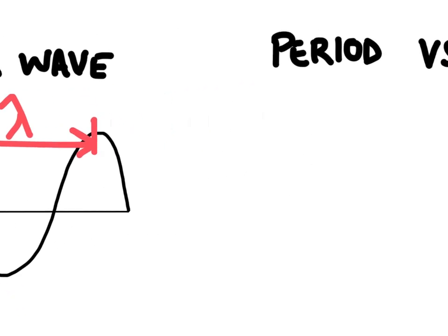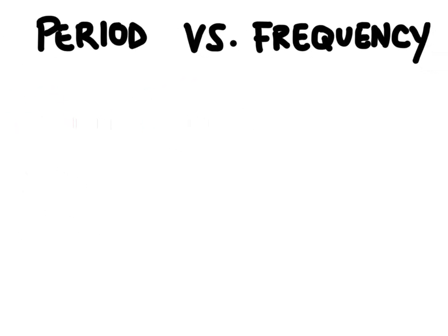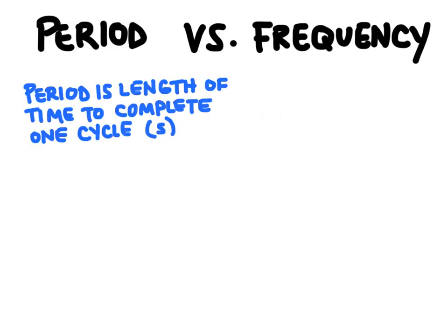All right, finally, let's look at the difference between a period of a wave and a frequency. So the period of a wave is the amount of time it takes for one wavelength to pass through a point, or in other words, the length of time to complete one cycle. And we measure periods in seconds.